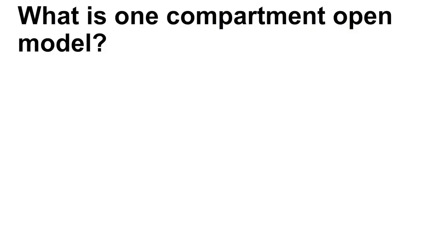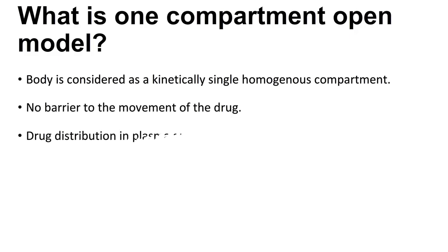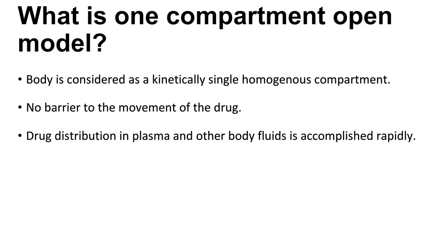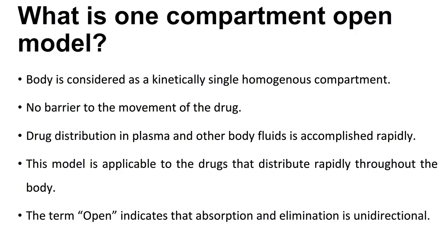What is the one-compartment open model? The body is considered as a kinetically single homogeneous compartment with no barrier to the movement of the drug. Drug distribution in plasma and other body fluids is accomplished rapidly. This model is applicable to drugs that distribute rapidly throughout the body. The term 'open' indicates that absorption and elimination is unidirectional.